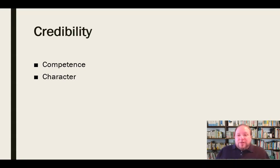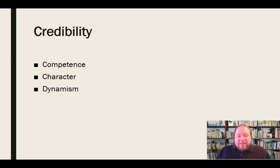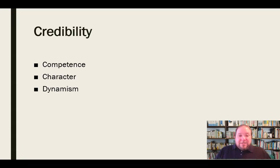Audiences are more persuaded by people who are high in both competence and character. We also can't underscore dynamism — people who are dynamic draw an audience in, fairly or unfairly. Dynamic persuaders can be very compelling, but eventually audiences will discover if competence and character aren't solid, and that will cause persuasion to crumble. But if you can combine all three — competence, character, and dynamism — you will really see your credibility skyrocket.